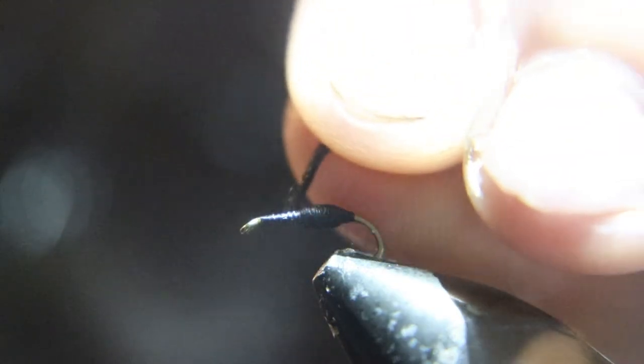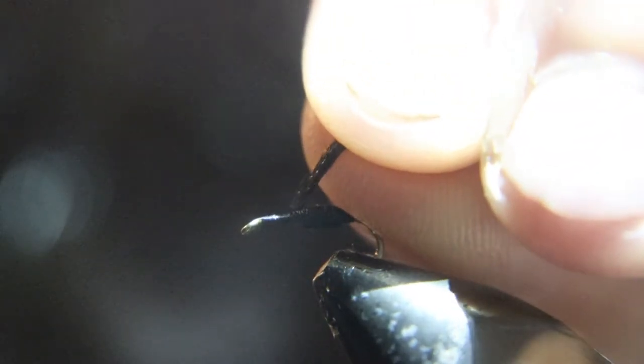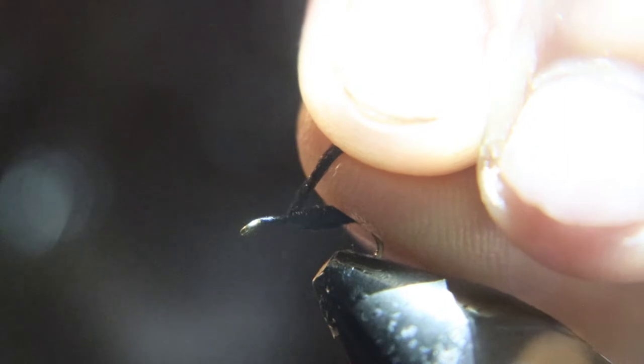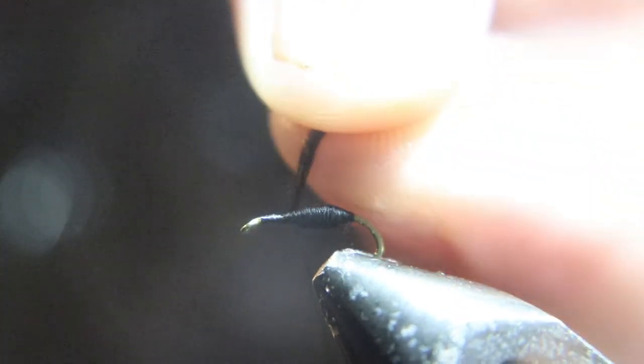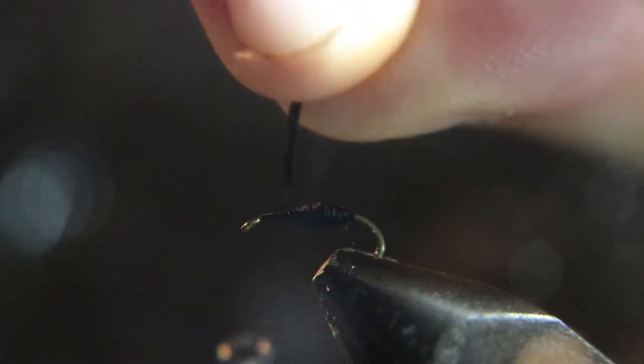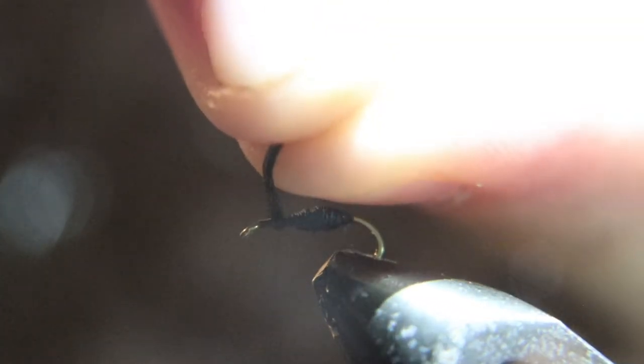Now we're going to tie in some of that floaty yarn we love so much here, and this is in black. I want about five strands of that. We looped it over the thread already and tie that in figure eight, same way you would tie in a spinner wing. Figure eight it flat.